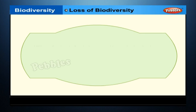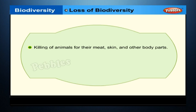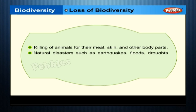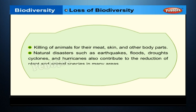Killing of animals for their meat, skin and other body parts is another cause. Natural disasters such as earthquakes, floods, droughts, cyclones and hurricanes also contribute to the reduction of plant and animal species in many areas.